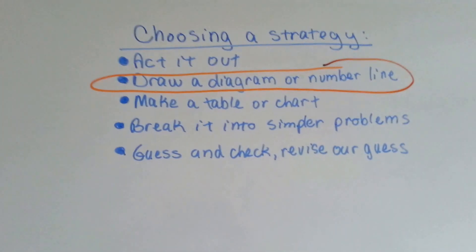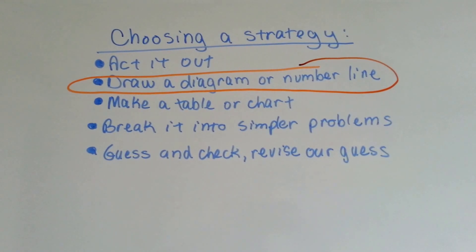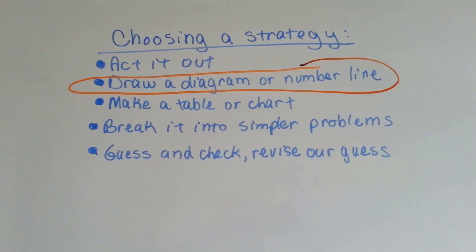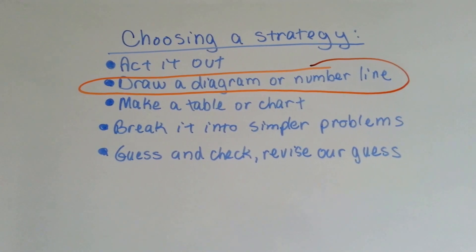Choosing a strategy to do a word problem, we can act it out, we can draw a diagram or a number line, which is what we're going to try this time, we can make a table or a chart, we can break it into simpler problems, or we can guess and check and revise our guess.